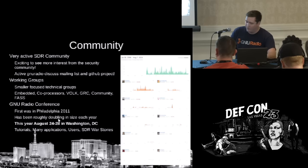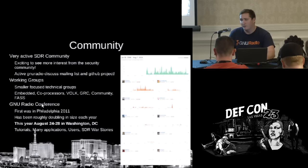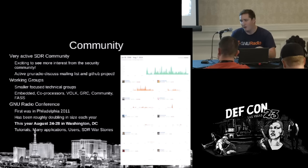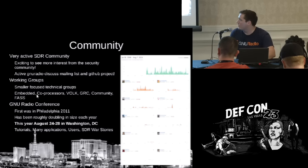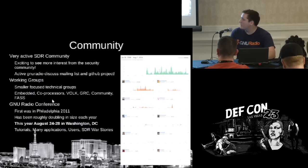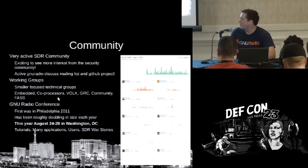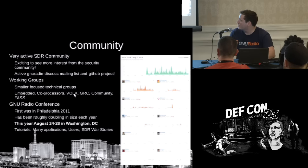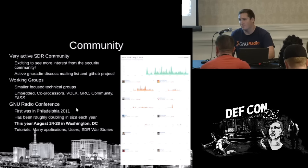There are six working groups — technically focused groups of a handful of people advancing features in their area. The embedded working group is doing a lot of work putting GNU Radio on ARM processors, Android phones and platforms. There's a coprocessor working group interested in using GPUs, DSP PCI cards, or coprocessors inside an Intel box as offload inside your GNU Radio graph. There's VOLK, which looks at SIMD instruction-level optimization inside SDR kernels — it has technically split off into its own project but remains in the GNU Radio ecosystem.